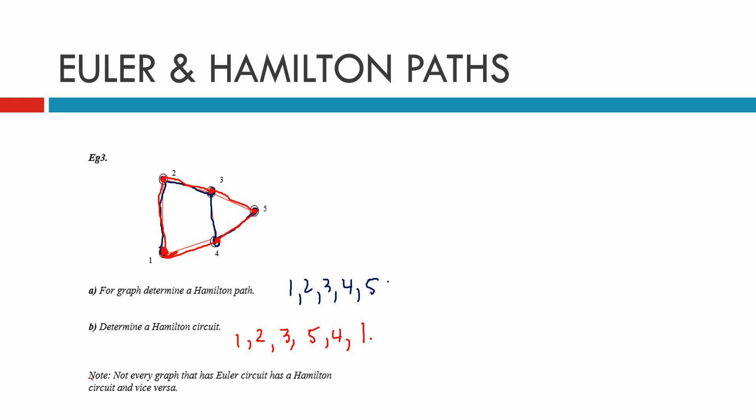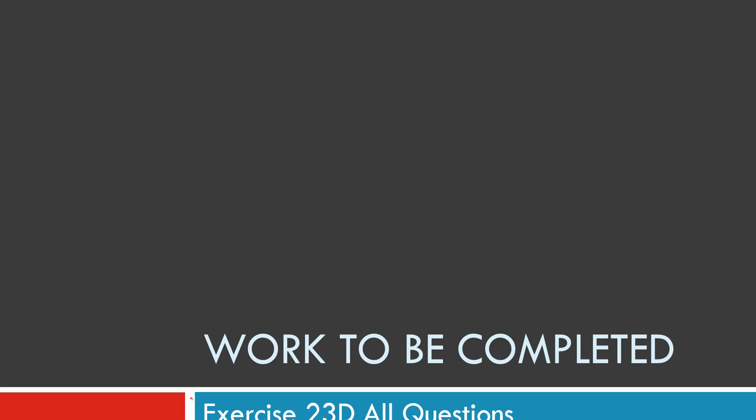Here's an important note: not every graph that has an Euler circuit has a Hamilton circuit, and vice versa. So you really need to work it out. The exercise is 23D.